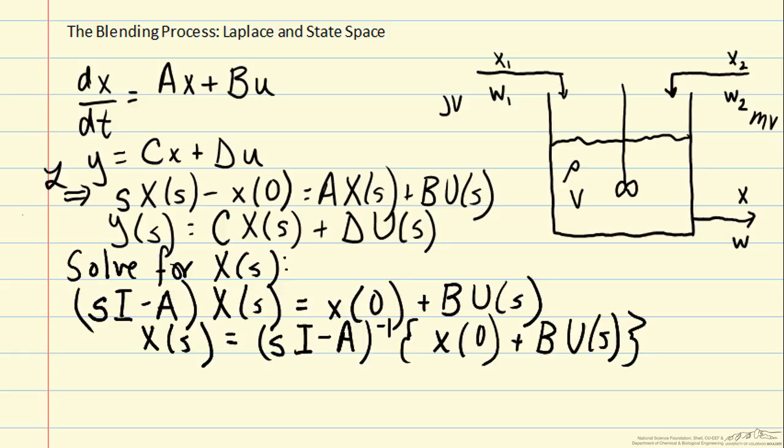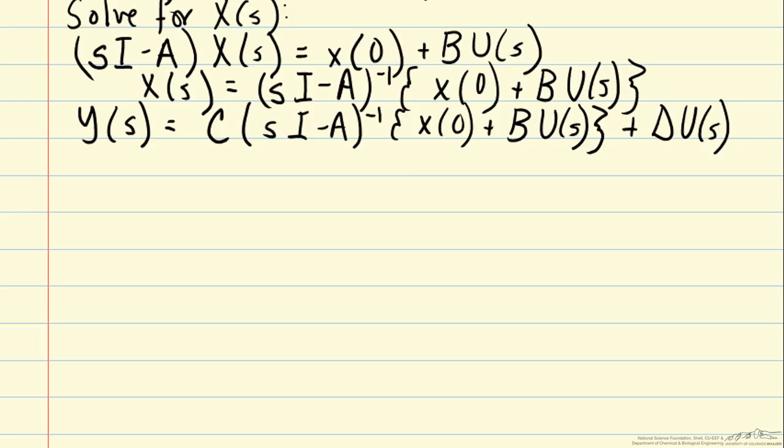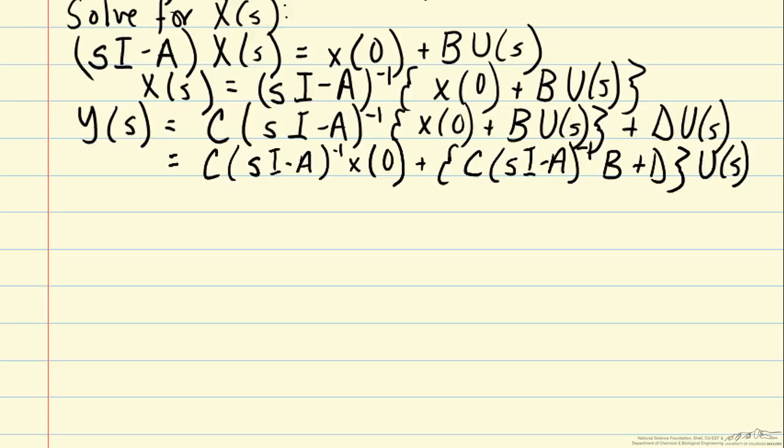Now we can look at our measurements, Y(s), and we can plug in X(s). We may wish to recombine some terms so that we have a single coefficient multiplying U(s). The term that multiplies our input u and describes its input on the measurement y is sometimes called the process transfer function.